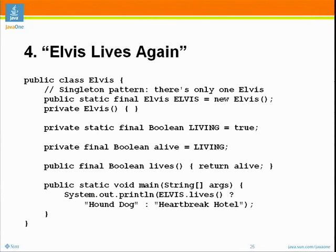We keep track of whether Elvis is living or dead — it turns out that the tabloids care about this. Our program simply prints 'hound dog' if the king is alive and 'heartbreak hotel' if he breathes no more. So: alive is a variable initialized to living, and living is initialized to true. This evaluates to true, so — hound dog. Elvis lives.